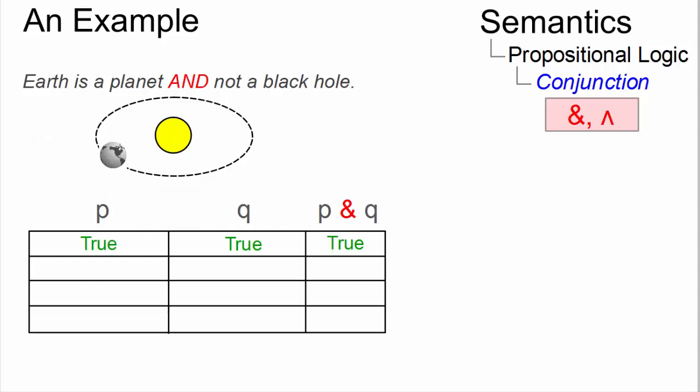We already know, if both conjuncts are true, the conjunction is true. If P, however, is false, and the Earth is not a planet, the whole proposition, Earth is not a planet and not a black hole, is false.